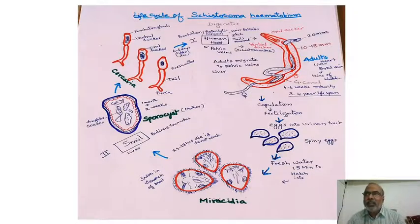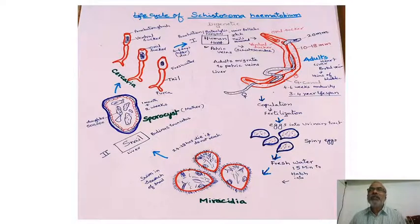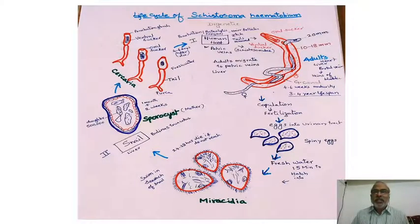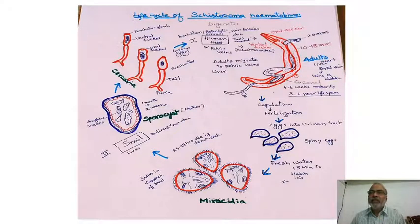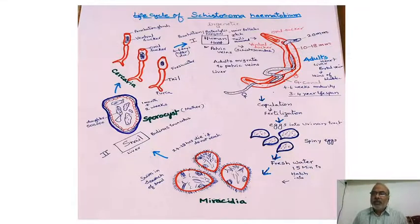The itching sensation near the hair follicles at the site of contact is called swimmer's itch. After attachment, the tail of the cercaria is shed, and they secrete proteolytic enzymes to penetrate the skin. They enter the capillaries, travel to the heart, then to the liver and lungs. From the portal vein, they migrate toward the pelvic region and settle in the veins near the bladder.